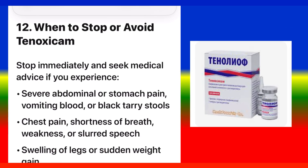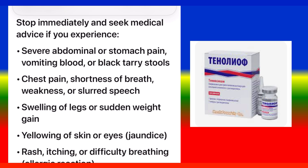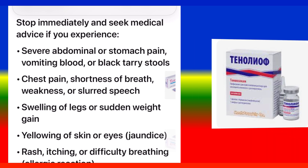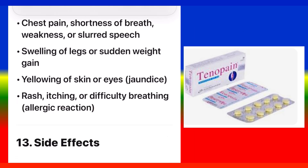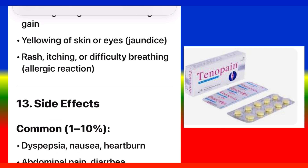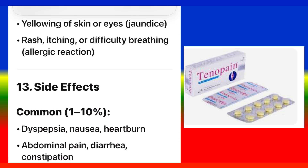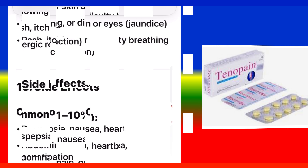When to Stop or Avoid Tenoxicam: Stop immediately and seek medical advice if you experience severe abdominal or stomach pain, vomiting blood or black tarry stools, chest pain, shortness of breath, weakness or slurred speech, swelling of legs or sudden weight gain, yellowing of skin or eyes (jaundice), or rash, itching, or difficulty breathing indicating an allergic reaction.